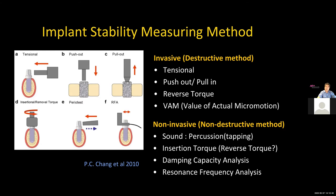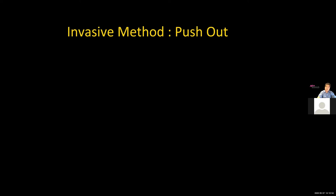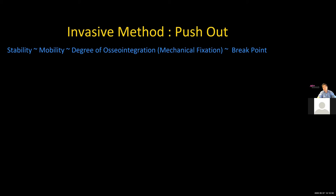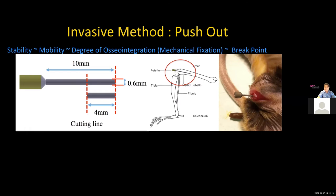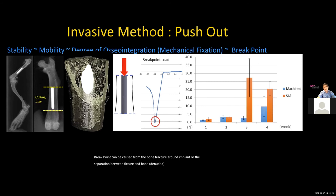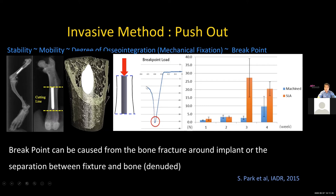Let me share one experimental method — the push-out test. Stability measures mobility, which reflects the degree of osseointegration. I created mini implants of 0.6 mm diameter, placed them in mouse femur bone, and one to six weeks later cut the bone and pushed out the implant. At the fracture point, no more force is needed — that tells you the bonding strength between implant and bone. As you can see, SLA surface shows higher push-out values than machined surface at three to four weeks, confirming that rough surface is better than smooth surface.